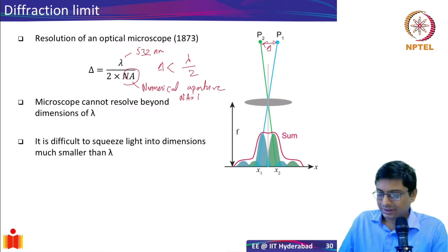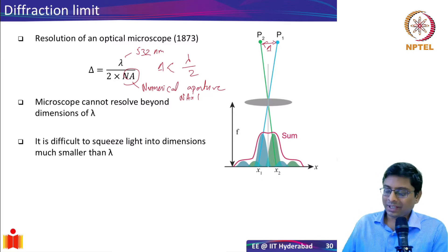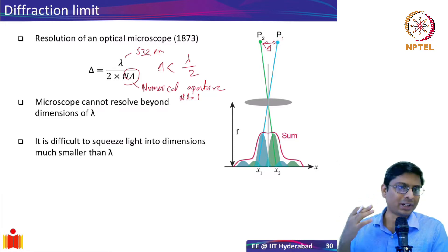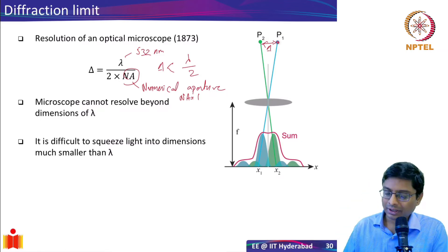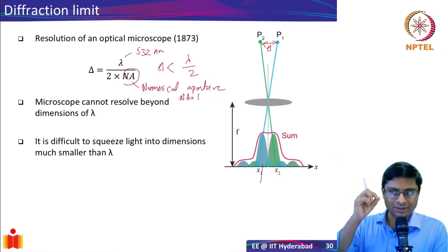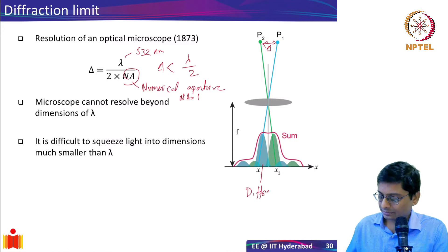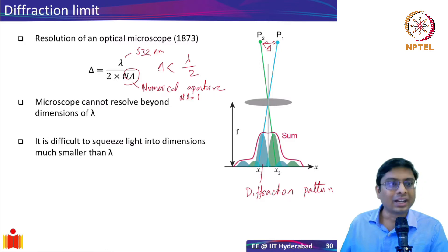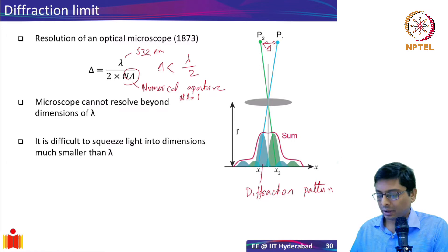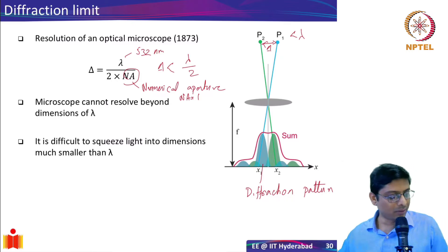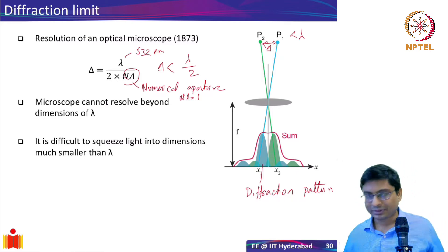How do we understand that? Let's say I'm trying to image a point P1 using a lens - a lens could simply be your pupil, your eye, which images on the retina. What happens is when your object diffracts through the iris, it forms a diffraction pattern. If your object is very large, there is no problem and you will see it clearly. But the moment the size of P1 becomes less than lambda, it diffracts more and more.